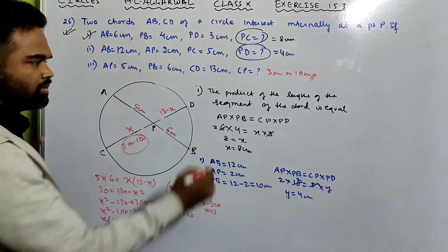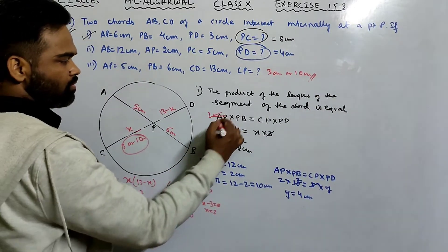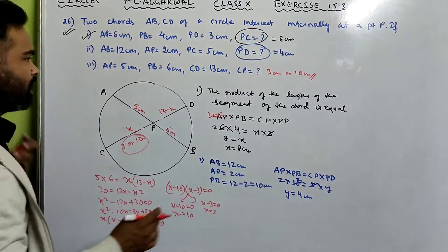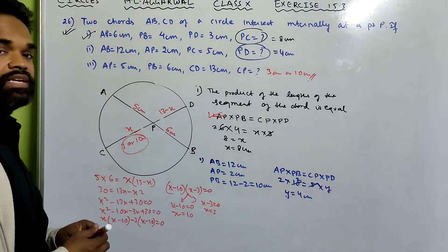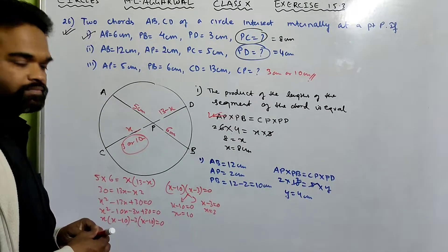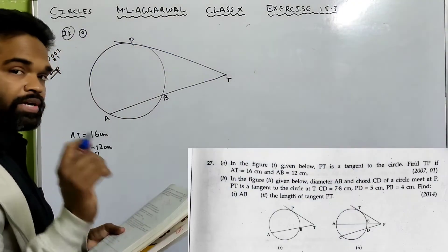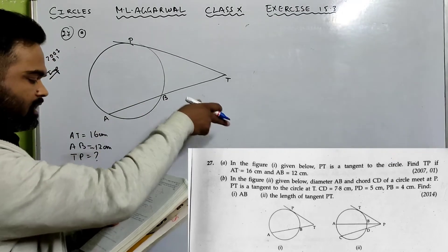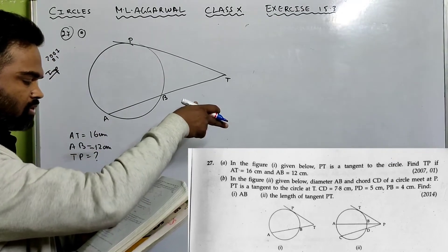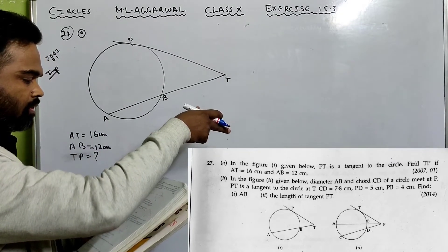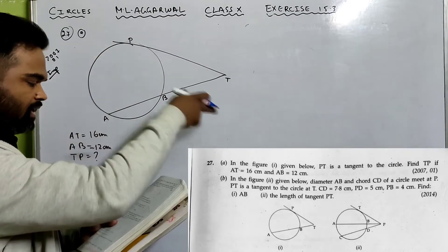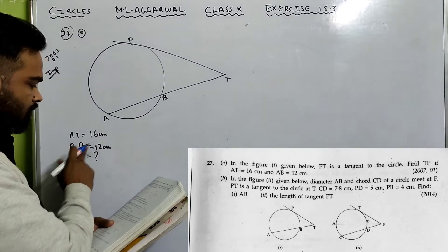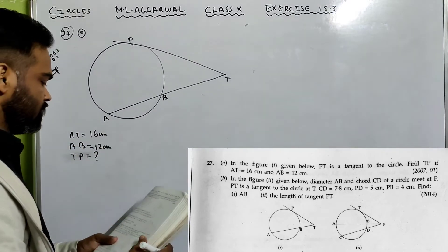That was very easy — just one theorem needed. Now let's do number 27, part A. In the figure, PT is a tangent to the circle. Find TP if AT = 16 cm and AB = 12 cm.